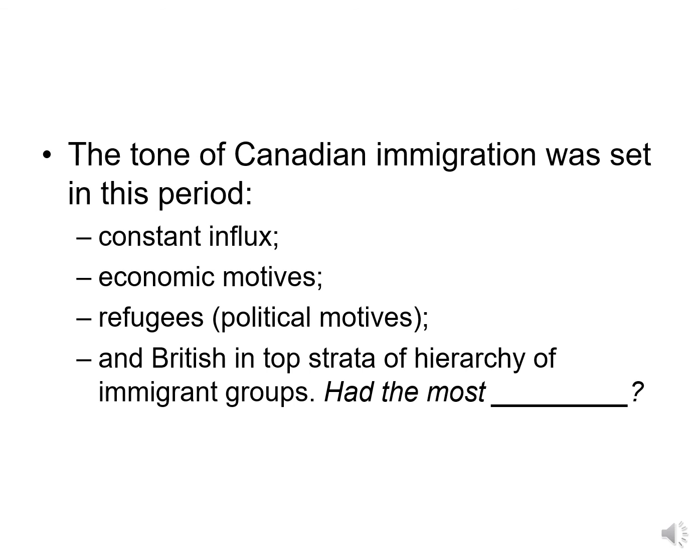So in this period, the tone of immigration to Canada is basically set. From then on, there is a constant influx of immigrants — only COVID has massively slowed that. Many come with economic motives, wanting to make better lives; others come with political motives, as refugees fleeing something awful. And always, the British are in the top strata of the hierarchy of immigrant groups, meaning they have the most privilege — which is what ethnic stratification means.